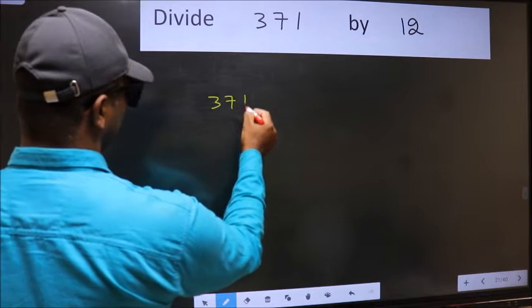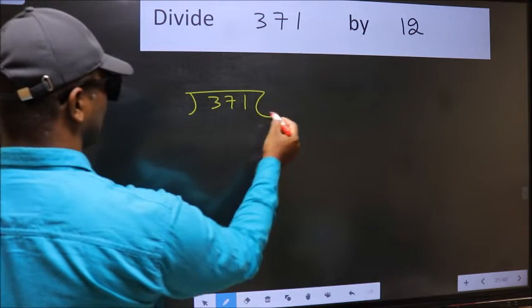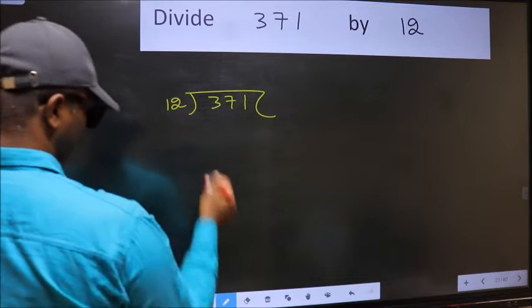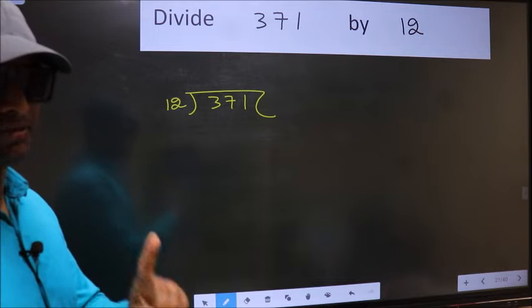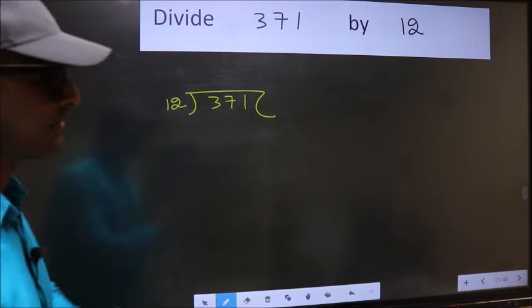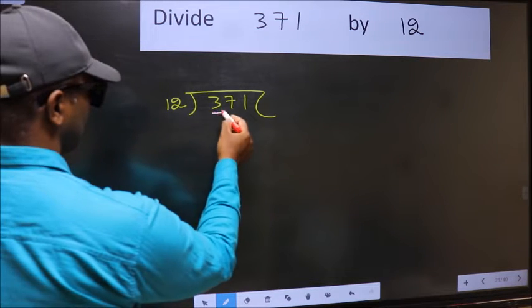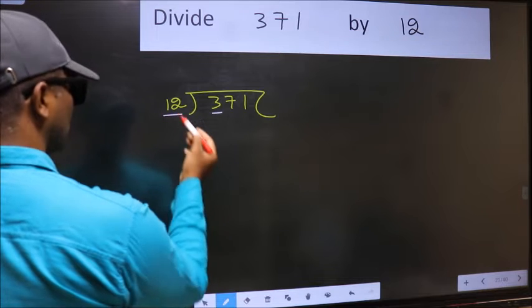371 and 12 here. This is your step 1. Next, here we have 3 and here 12.